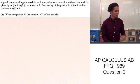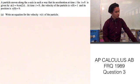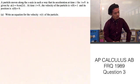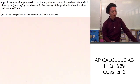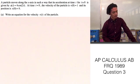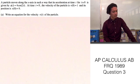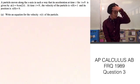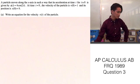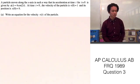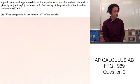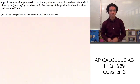Let's go ahead and answer this 1989 FRQ question 3 from the calculus AP test. It says a particle moves along the x-axis in such a way that its acceleration at time t, for t greater than or equal to 0, is given by a(t) = 4cos(2t). At time t = 0, the velocity is v(0) = 1, and its position is x(0) = 0.